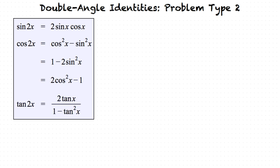And tangent of 2x equals 2 times tangent of x over 1 minus tangent squared of x. We will use these formulas to solve our double angle identities.